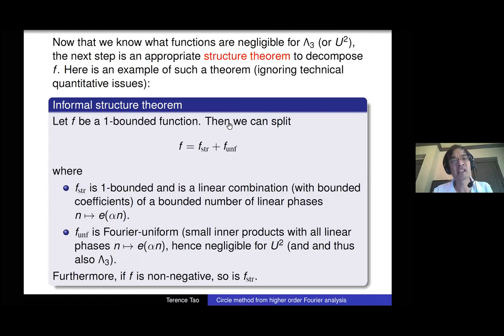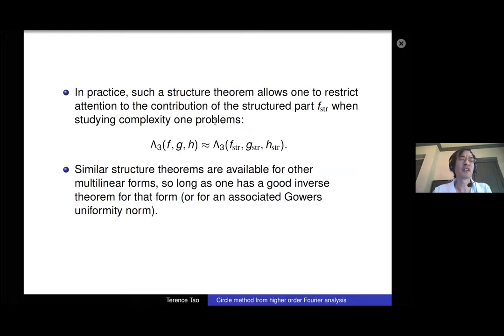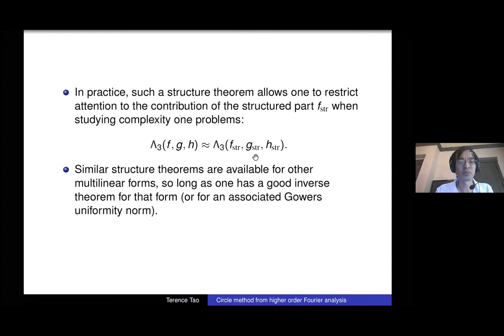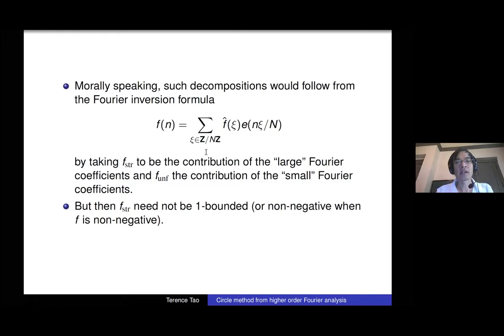The slickest proof of these decompositions uses duality — applying the Hahn-Banach theorem and proving a dual statement instead. The upshot is that all uniform components are negligible and can be thrown away. When evaluating a form at arbitrary functions, you only need to evaluate at the structured part, which is an explicit finite combination of Fourier phases. This philosophy — reducing to structured components — is the aspect of the circle method that generalizes to higher order, analogous to isolating major arc contributions.